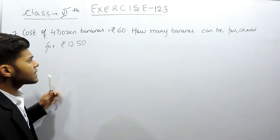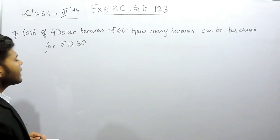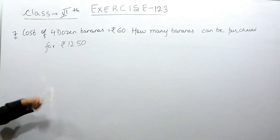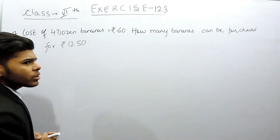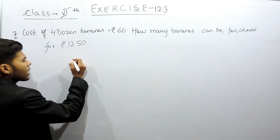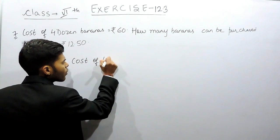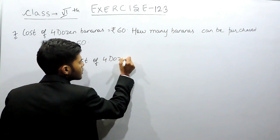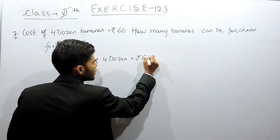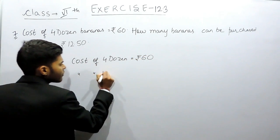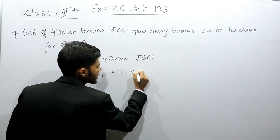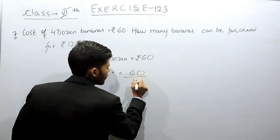Now what we can do is first of all simplify this question a little bit and find the cost of one banana or one dozen bananas. So supposing we find the cost of one dozen bananas, if cost of four dozen is rupees 60, therefore cost of one dozen will be equals to 60 by 4.